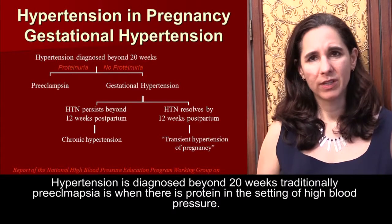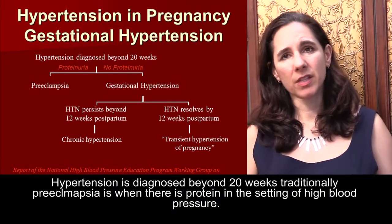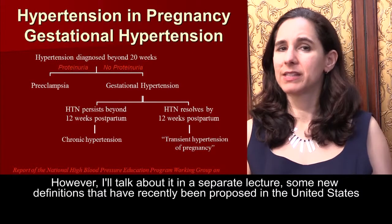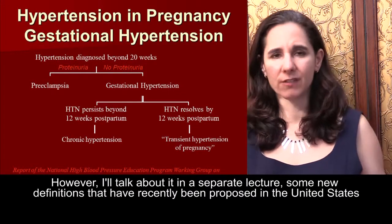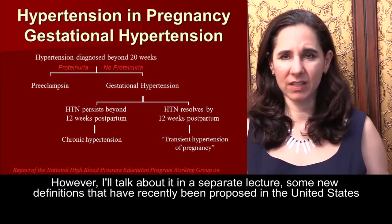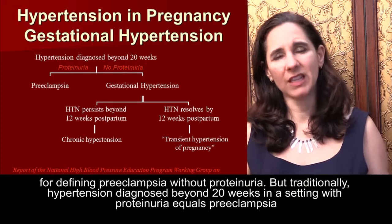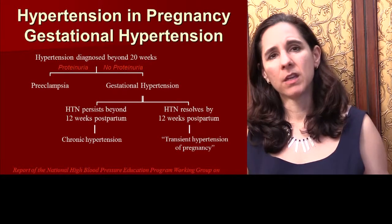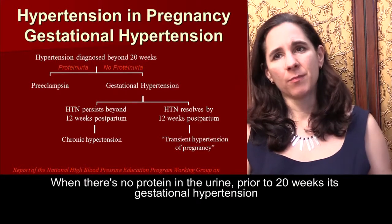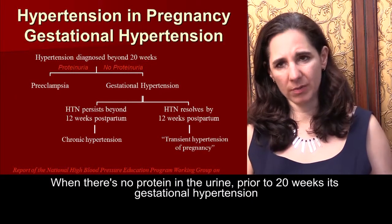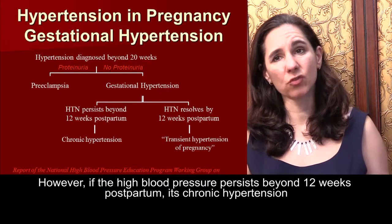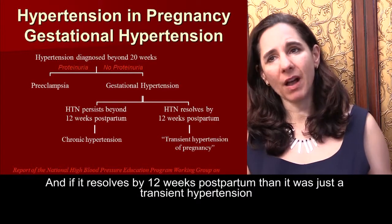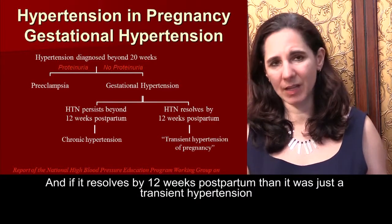Hypertension diagnosed beyond 20 weeks — traditionally, preeclampsia is when there is proteinuria in the setting of high blood pressure. I will discuss new definitions recently proposed in the U.S. for preeclampsia without proteinuria in a separate lecture. Hypertension diagnosed beyond 20 weeks without proteinuria and prior to 20 weeks is gestational hypertension. If the high blood pressure persists beyond 12 weeks postpartum, it is classified as chronic hypertension; if it resolves by 12 weeks postpartum, it was transient hypertension of pregnancy.